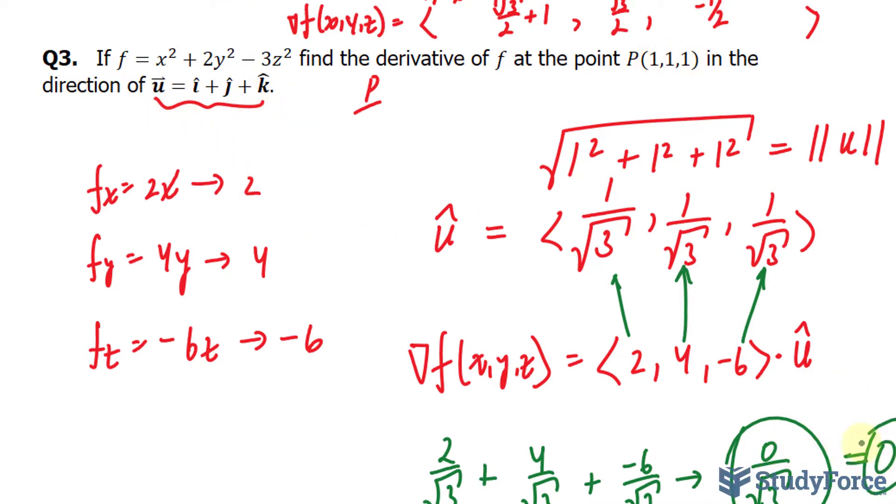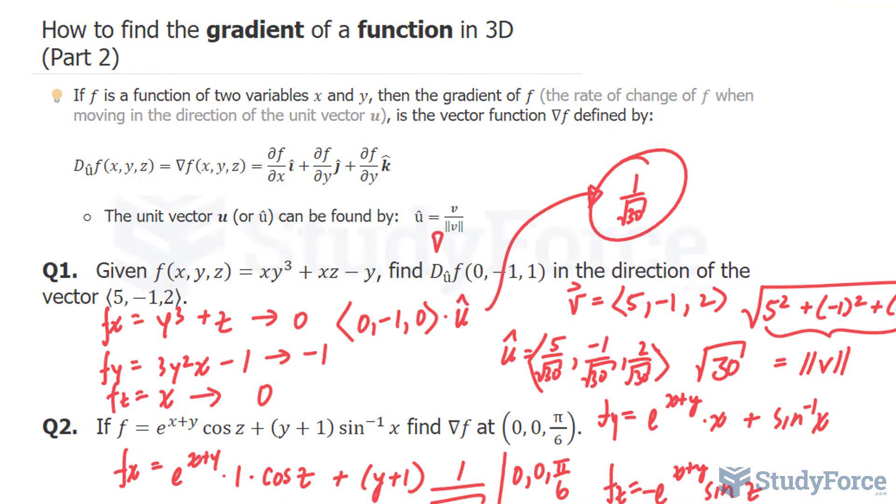0. Nothing. No change at all. There you have it. That is how to find the gradient of a function in 3D.